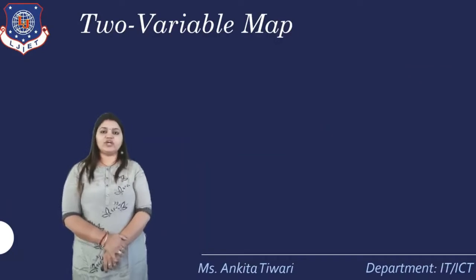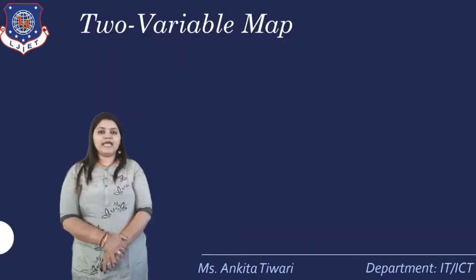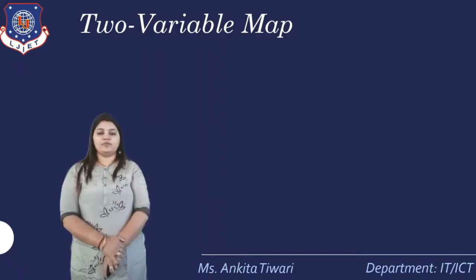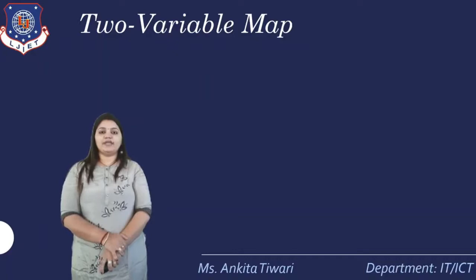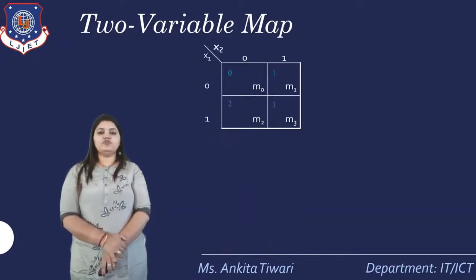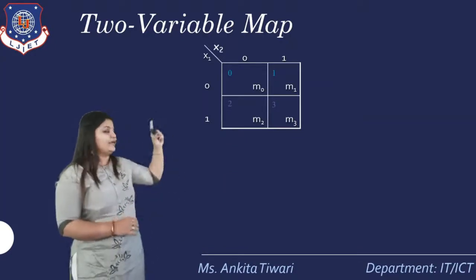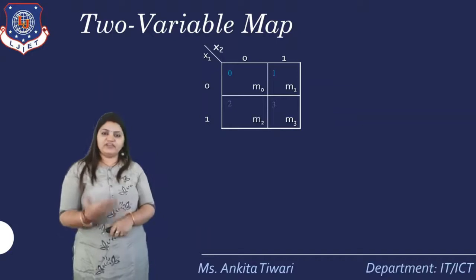If a question contains two variables, that means A and B, two variables give four possible combinations. We get that using the formula 2 raised to N. Here, 2 raised to 2 equals 4. So we have four possible combinations for a two-variable K-Map. The structure of the K-Map is defined with variables X1 and X2.